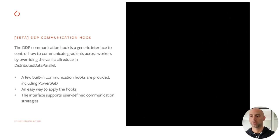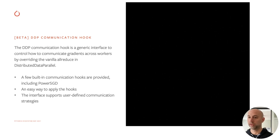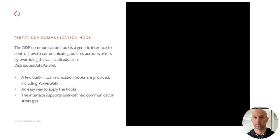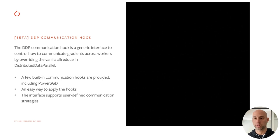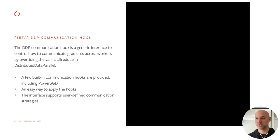The other feature I want to call out is our DDP communication hook. This is almost a framework or toolkit in itself. Basically it allows you to bypass the vanilla all-reduce in DDP and insert your own communication strategy. There are a number of built-in communication hooks available at release — for example, PowerSGD for gradient compression, which we've seen quite a bit of benefit from in scaling some models internally. But you can also define your own communication strategy, plug it into this communication hook, and try something out yourself. This is great for using out-of-the-box strategies like PowerSGD, and from a research perspective it gives you a great foundation to ideate on and create new strategies.